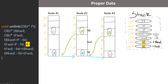We have the saved EIP for the unlink function, the EBP for the linked function, and then the two local variables: T-forward and T-backward, which are at minus four from EBP and minus eight from EBP. We'll see if I remember that in a few minutes.